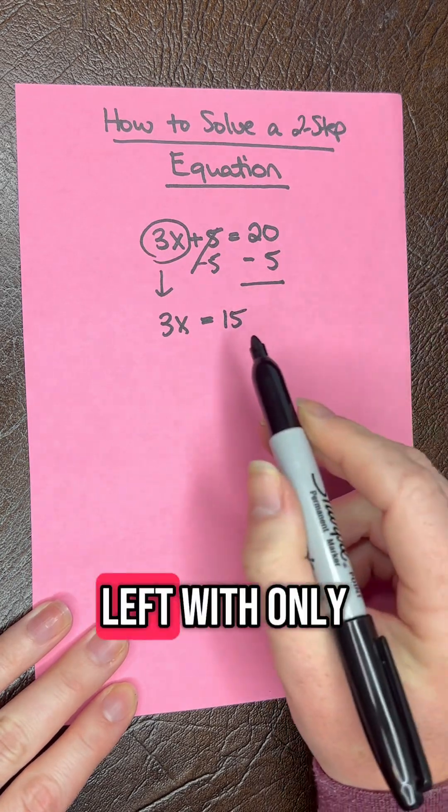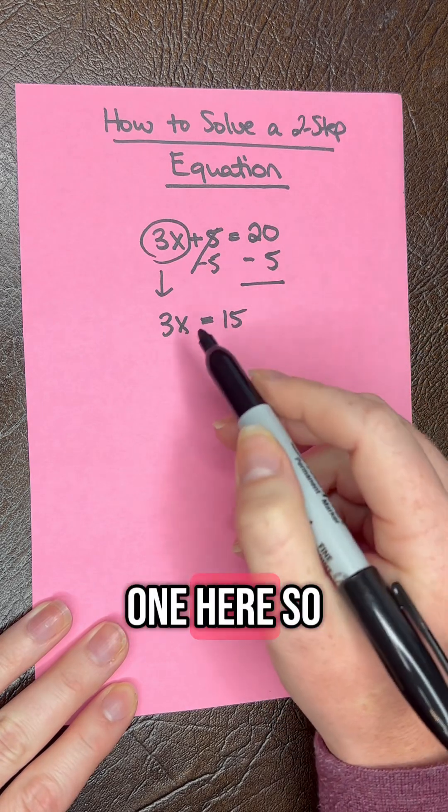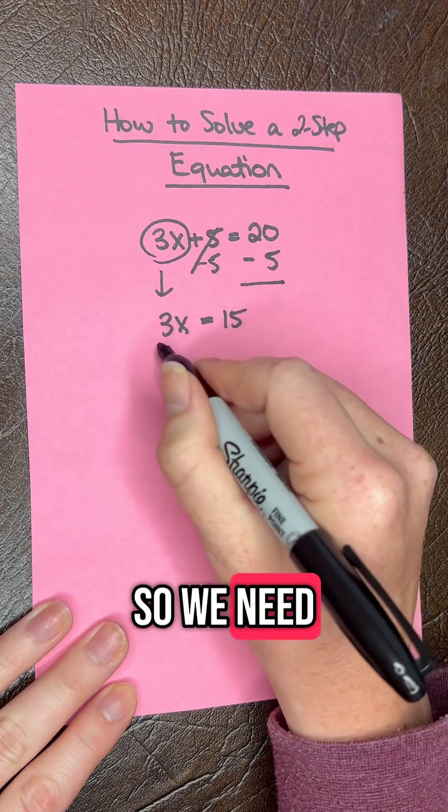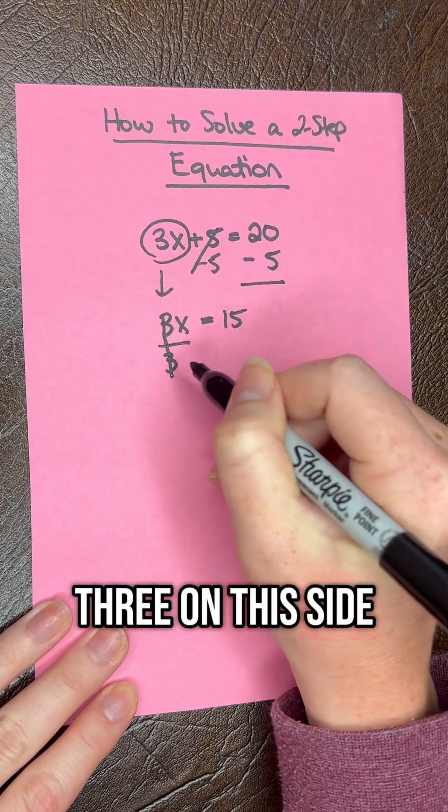Now we're left with only one step left. We did step 1 here. We need to get x alone. The 3 is touching the x, so we need to divide by 3 on this side.